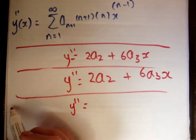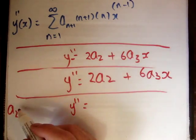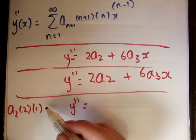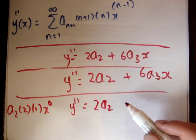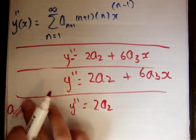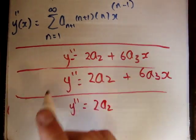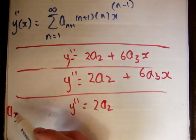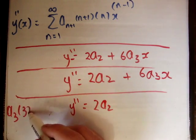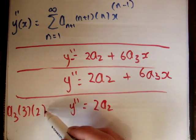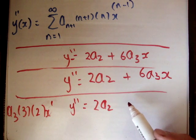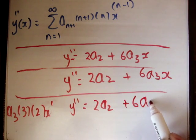And finally what I'm going to do is do the same thing for this equation here. So we're going to get y double prime is equal to, so n is equal to 1. So if we plug in n is equal to 1, we're going to get a2, times 2, times 1, times x to the 0. That becomes 2a2. And then if we plug in n is equal to 2, we're going to get a3, times 3, times 2, times x to the 1. So that becomes 6a3x.